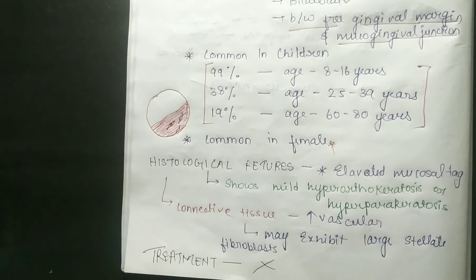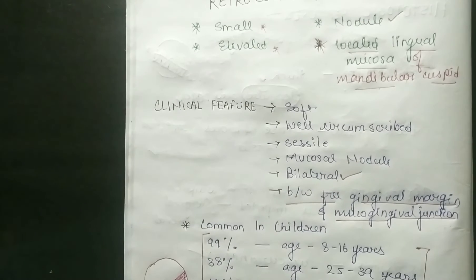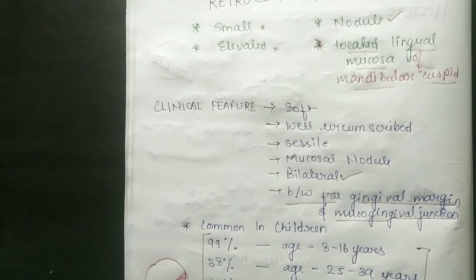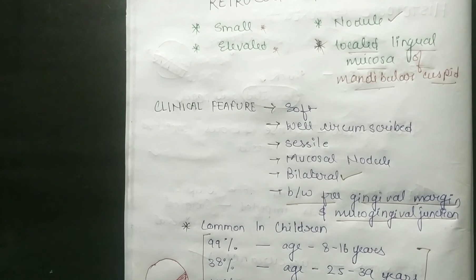To summarize retrocuspid papilla: nodules are present, found between the gingival margin and mucogingival junction. It is mostly seen in children and females. This is a very small topic, so don't worry about it. Thank you so much for watching the video — if you liked it, don't forget to subscribe to the channel.